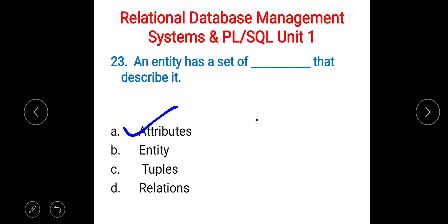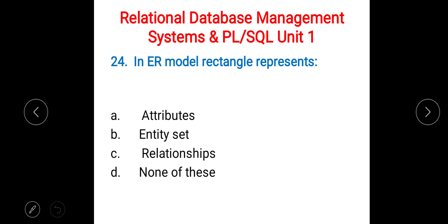Next: in the ER model, a rectangle represents — A) attributes, B) entity set, C) relationship, D) none of these. The right answer is B) entity set.